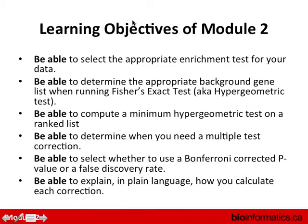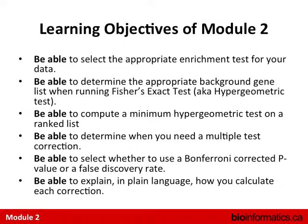The basic objectives of this module are to learn about the statistics behind enrichment analysis and pathway enrichment analysis, to be able to select the appropriate enrichment test out of multiple that are available, understand what the concept of a background gene list is when running Fisher's exact test, also known as the hypergeometric distribution, be able to compute a minimum hypergeometric test on a ranked list, determine when you need multiple testing correction, and whether to use a Bonferroni-corrected p-value or a false discovery rate.